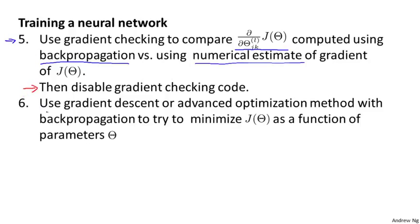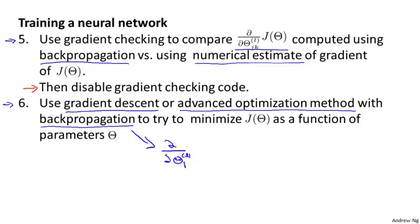Finally, we use an optimization algorithm such as gradient descent or one of the advanced optimization methods such as L-BFGS or conjugate gradient, as embodied in fminunc or other optimization methods. We use these together with backpropagation. Backpropagation computes the partial derivatives for us, and we know how to compute the cost function, so we can use one of these optimization methods to try to minimize J(θ) as a function of the parameters θ.